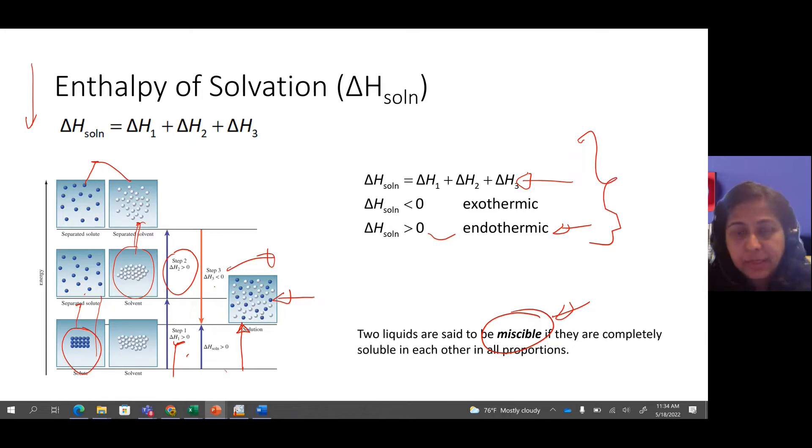Just to review this: the delta H solution is the addition of delta H1, H2, and delta H3. Always delta H1 and delta H2 must be endothermic processes. And delta H3 is an exothermic process, because it involves making new interactions, making the new solute-solvent interactions.